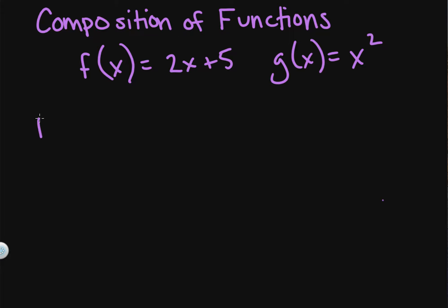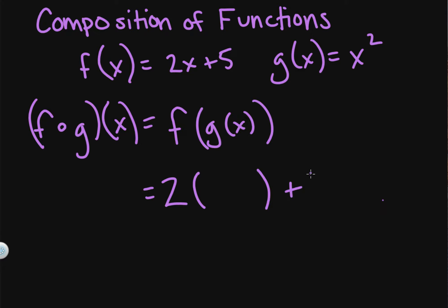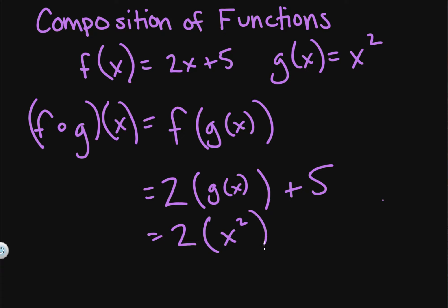The notation for composition of functions looks like f and then an open circle — f of g of x. What this means is you're going to take f and use g of x as the input. So we take our f of x function, replace the x with parentheses. f of x is 2x plus 5, but instead of using x, we plug in g of x, which is x squared. So f of g of x equals 2x squared plus 5.